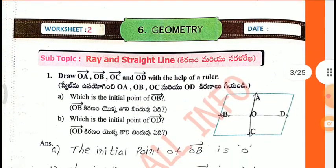Worksheet 2, Subtopic: Ray and Straight Line. First one: Draw OA, OB, OC, and OD with the help of a ruler.